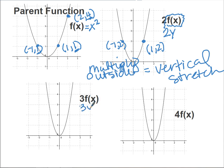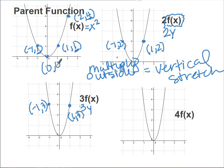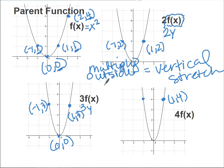With 3·f(x), that means take all y values and multiply them by 3. So (1,1) becomes (1,3); (2,4) becomes (2,12), which is way off the graph; (-1,1) becomes (-1,3). Notice that (0,0): if you multiply the y value by anything it's still going to be 0, so all of these still pass through (0,0). Same thing with 4·f(x): (1,1) becomes (1,4), (2,4) becomes (2,16), (-1,1) becomes (-1,4).